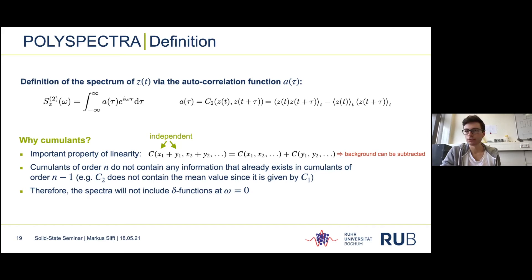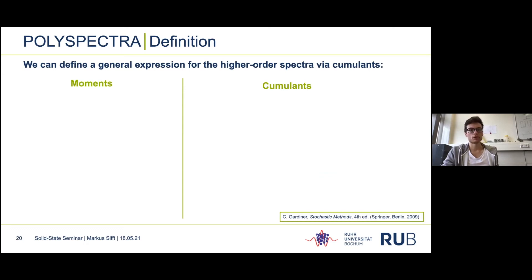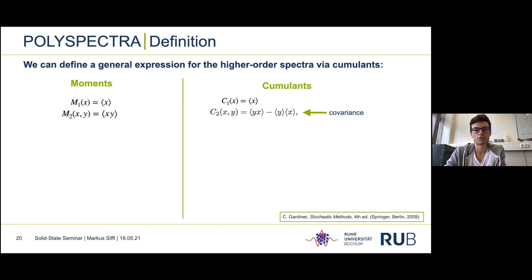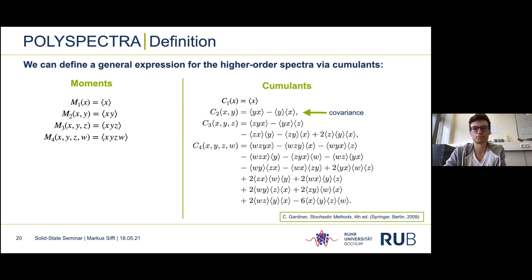For example, the C2 in the autocorrelation function already subtracts the means from the signal, since they are already contained in the C1. This has the nice effect of removing delta functions due to a constant mean value at ω = 0. Since we are working with cumulants up to order four, I want to show how they are calculated. The first moment and first cumulant are both just the means. Differences arise at the second order, where the cumulant gives the variance. For the fourth order we are already dealing with 15 terms.